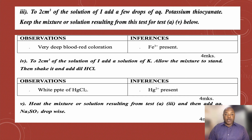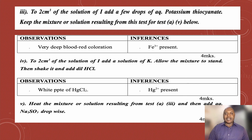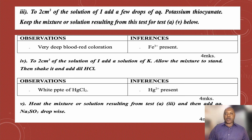Test A4: to 2 cm³ of the solution of I, add a solution of K. Allow the mixture to stand, then shake it and add dilute hydrochloric acid. My observation was a white precipitate of mercury chloride. My conclusion was that mercury ion — that is, the cation Hg²⁺ — is present.